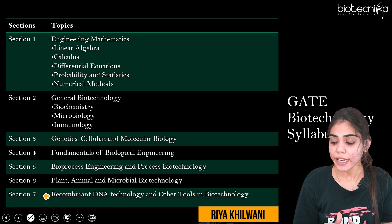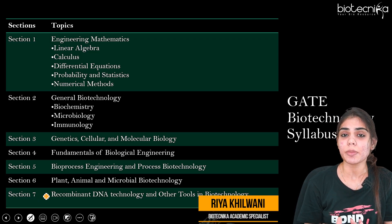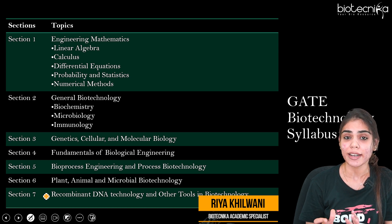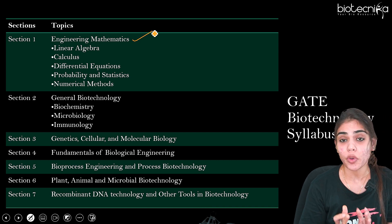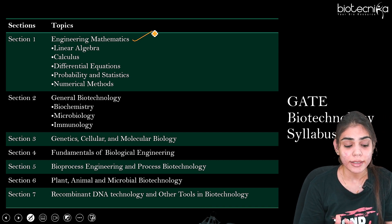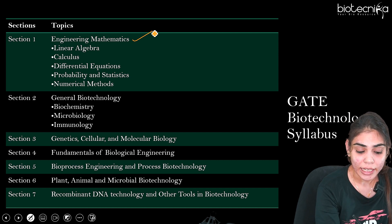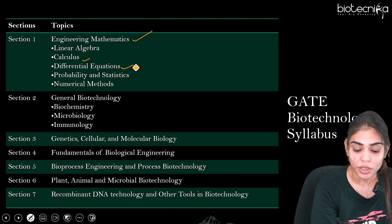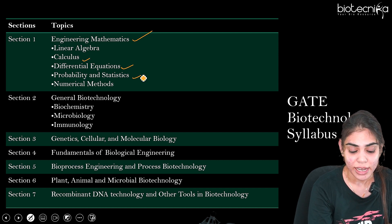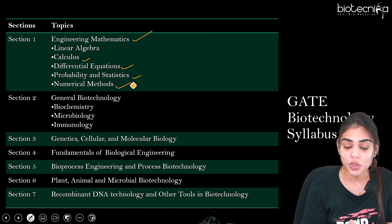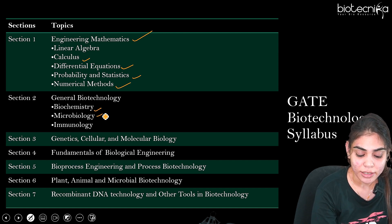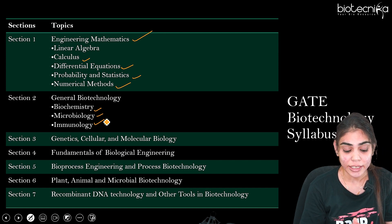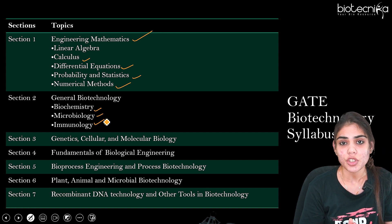If you see the GATE Biotechnology syllabus, it is fully divided or categorized into seven sections. The first section is Engineering Mathematics, where you have to learn topics such as linear algebra, calculus, differential equations, probability and statistics, as well as numerical methods. Section 2 deals with General Biotechnology, which includes three major sub-parts: biochemistry, microbiology, as well as immunology.